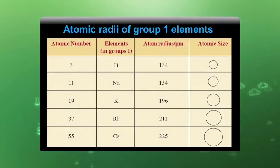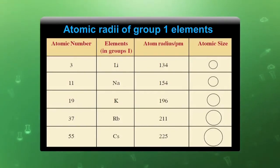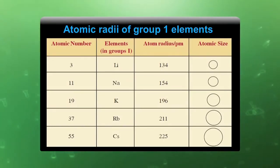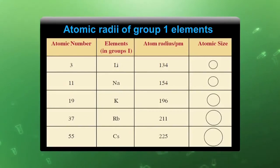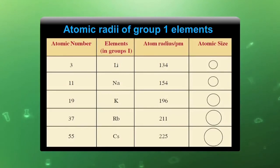This table shows the regular increase of atomic size of elements in group 1 from lithium to cesium. The first group contains all these elements — lithium to cesium — and as we move from lithium to cesium, atomic size increases. The reason is there is a regular increase in number of shells.